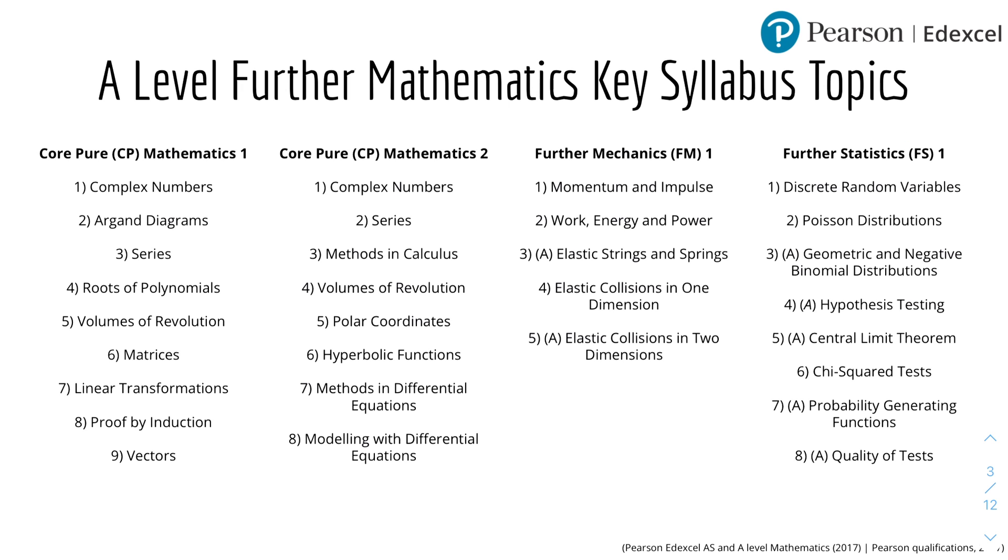And for the Statistics side of course, we have Further Stats 1 or FS1. And here are the abbreviations so that it's easy to understand. So as well as Further Mechanics, there's a combination between AS and A-level topics. So 1, there's Discrete Random Variables and Poisson Distribution, which are both in the AS course. And 3 and 5 and 7 and 8, they are all in the A-level course, which talks about Geometric and Negative Binomial Distribution, Hypothesis Testing, Central Limit Theorem, Probability Generating Functions and the Quality of Tests. And for number 4, Hypothesis Testing, it's actually in both AS and A-level. Because in the AS-level part of Hypothesis Testing, we talk about Poisson Distribution as well as Binomial Distribution. And for the A-level part of the topic for Hypothesis Testing, we talk about Geometric Distribution, which we will learn in A-level. And then for the remaining of the AS, we will learn about Chi-Squared Tests.